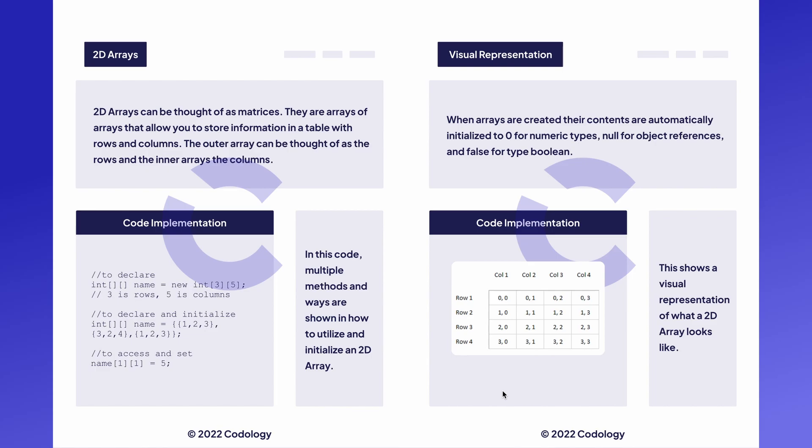Here is a picture showing a visual representation of what a 2D array looks like. At element index 0, 0 you look at the first one — left and top. As you go down the rows your first index will increase by 1, and as you go across the columns your second index will increase by 1.